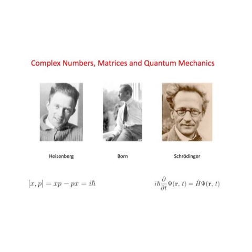And you also need complex numbers, and this was realized by Erwin Schrödinger, one of the other great inventors of quantum mechanics. And here are their equations. This is the Schrödinger equation, which Chris Howells referred to, and it is an extraordinarily beautiful equation. What appears there is i, the square root of minus one.